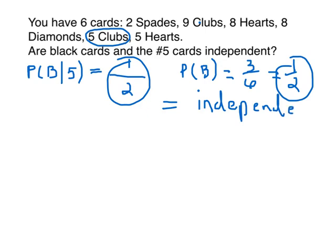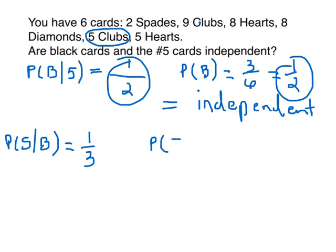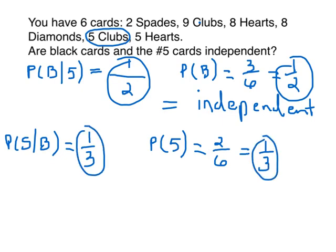Choosing a black card does not affect choosing a number five card. Now I just want to show you that if we had made the black card the condition rather than the number five, it would work the same way. Cards that are black and number five at the same time: one. Out of how many black cards total? Three. So the probability is one-third. The probability without the condition — just probability of five — is two out of six, which is also one-third. Even though the numbers are different from before, the result is the same: the two events are independent.